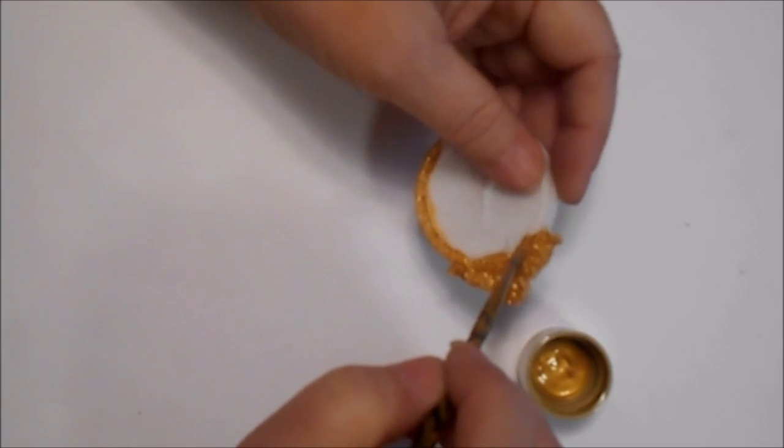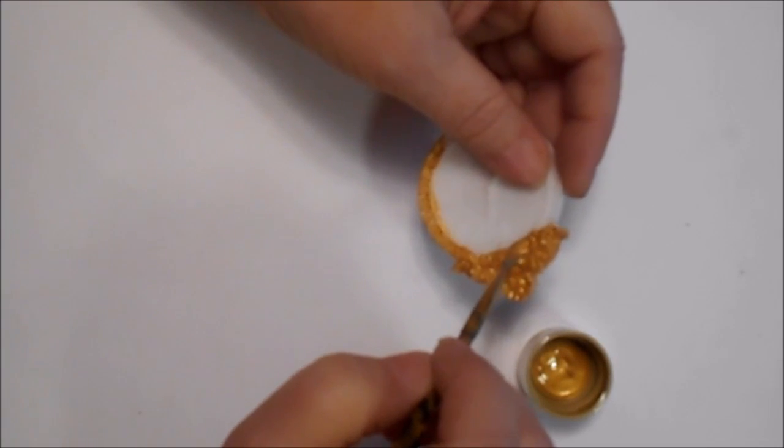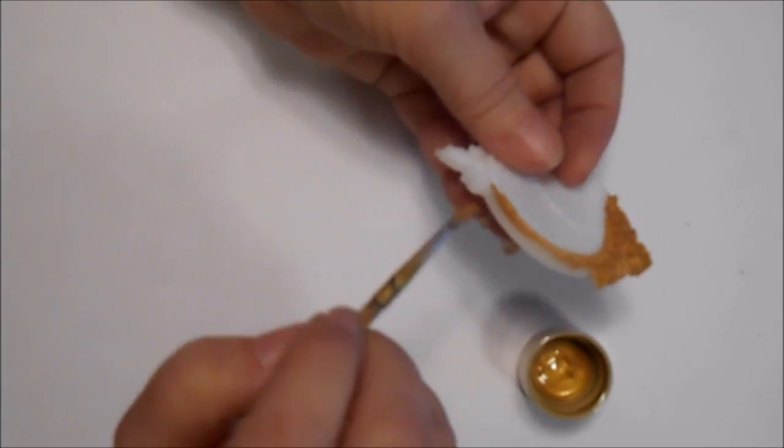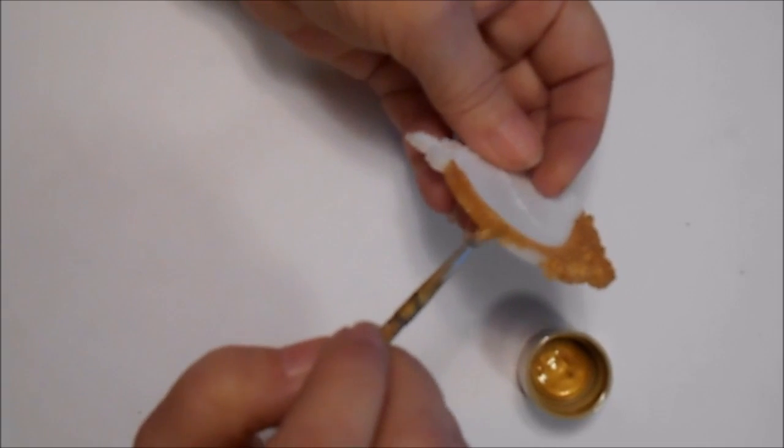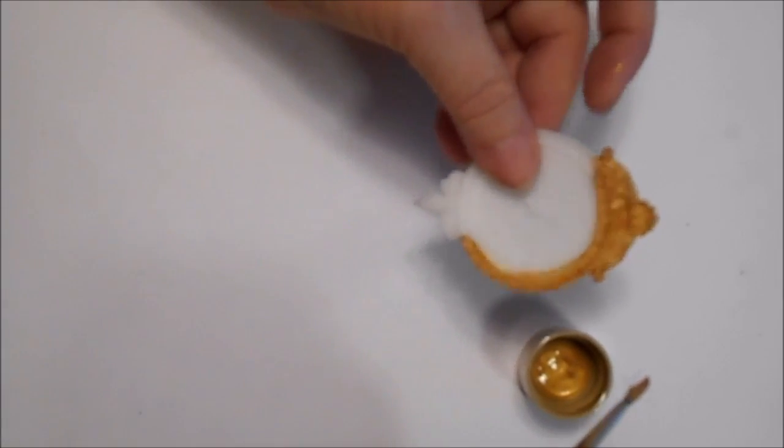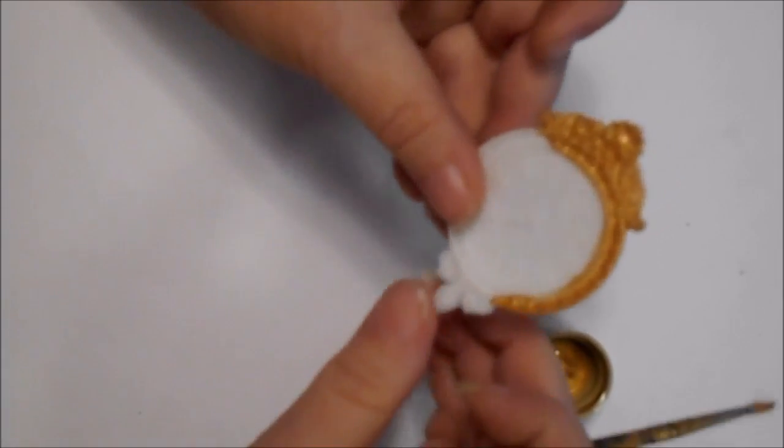All right, see how I got a little out of line right there? That's why the first coat of gold then the coat of white, just to help keep your lines a little cleaner. All right, so I'm going to continue on with this and I'll be right back.